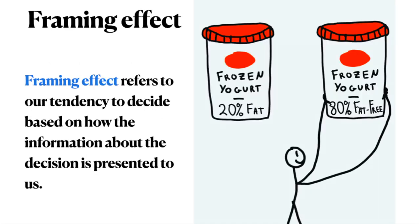Framing effect refers to our tendency to make decisions based on how the information about the decision is presented to us. In other words, our response depends on whether the option is presented in a negative or positive light. This means that the same information can be more or less attractive depending on the wording or what features are highlighted.